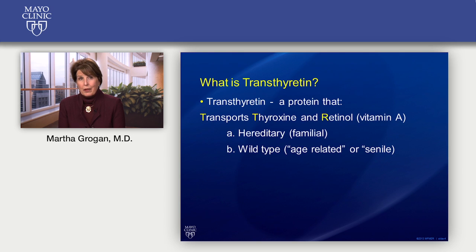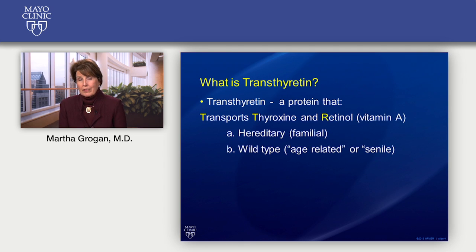There are two types of transthyretin amyloidosis. One is the hereditary or familial type, and the second is the wild-type. It's also called age-related — or previously it was called senile cardiac amyloidosis, because it was originally discovered in men who were usually 80 or 90 years old. But we've gotten rid of that name because we've had patients as young as 47 years old diagnosed with this disease, so we definitely don't consider that to be senile.